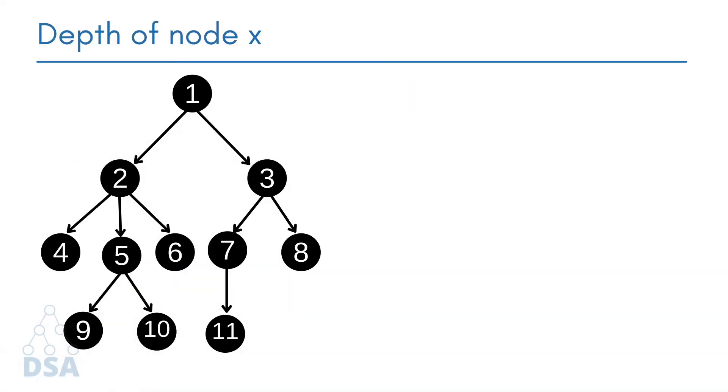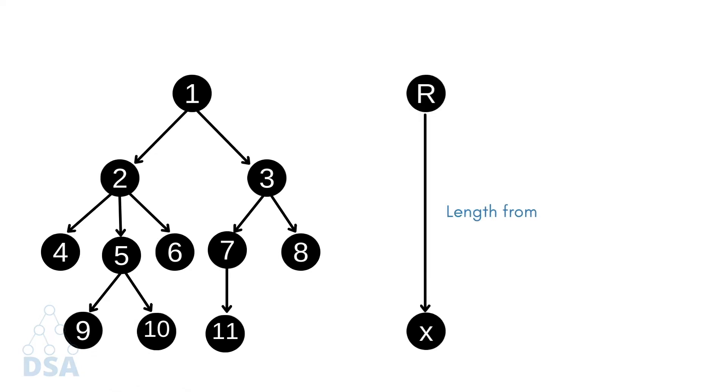Now we will talk about depth of node x. The depth of node x can be defined as the length of the path from the root to node x. One edge contributes one unit length in the path. So the depth of x can also be defined as the number of edges between the root node and node x. The root node has zero depth.